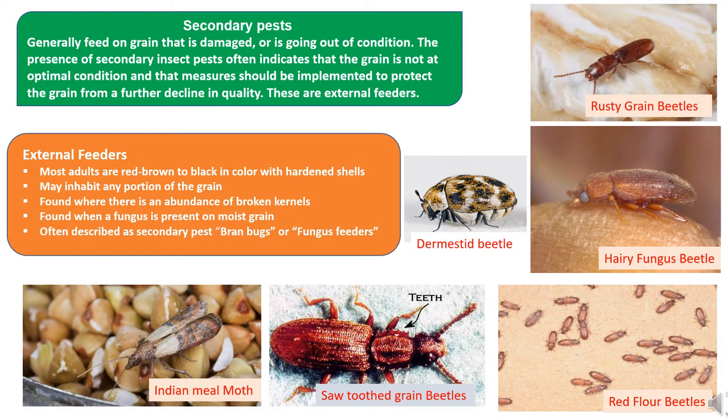The second type of stored insect pests are secondary pests. These are pests that survive by feeding on already damaged grains or seeds caused by primary pests. Secondary pests feed on grain that is damaged or going out of condition. The presence of secondary pests indicates that the stored grain or seed is not at optimal condition, and measures should be implemented immediately to protect the grain from further decline in quality.